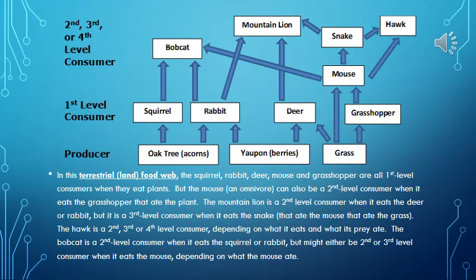In this terrestrial, or land, food web, the squirrel, rabbit, deer, mouse, and grasshopper are all first-level consumers when they eat plants. But the mouse, an omnivore, can also be a second-level consumer when it eats the grasshopper that ate the plant. The mountain lion is a second-level consumer when it eats the deer or rabbit, but is a third-level consumer when it eats the snake that ate the mouse that ate the grass. The hawk is a second-, third-, or fourth-level consumer depending on what it eats and what its prey ate. The bobcat is a second-level consumer when it eats the squirrel or rabbit, but might be either a second- or third-level consumer when it eats the mouse, depending on what the mouse ate.